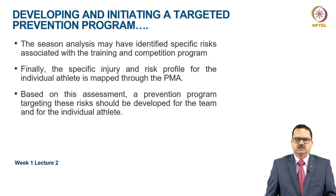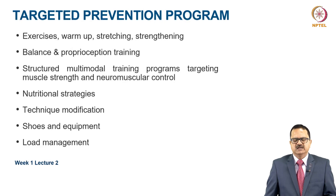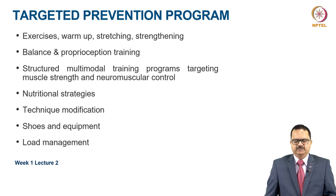Based on this assessment, a prevention program specifically targeting identified risks should be developed for both the team and the individual athlete. A targeted prevention program generally includes: targeted exercise warm-up, stretching, and strengthening; balance and proprioception training; structured multimodal training programs targeting muscle strength and neuromuscular control; nutritional strategies to improve diet, hydration, and recovery; technique modification to reduce injury risk and improve performance; shoes and equipment modifications; and load management of the athlete in collaboration with the strength and conditioning coach and coaching staff.